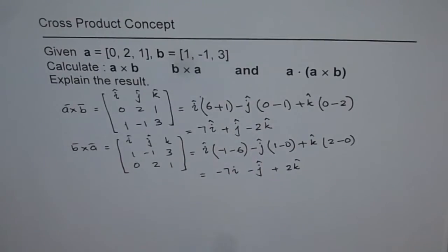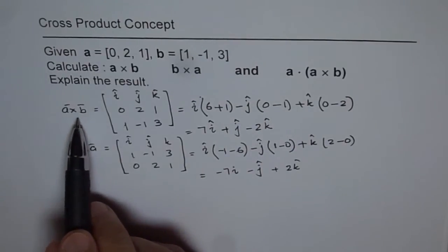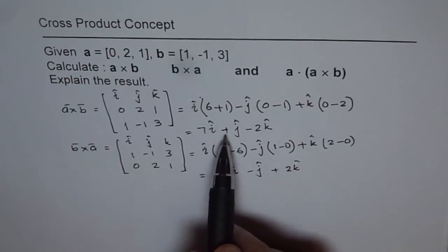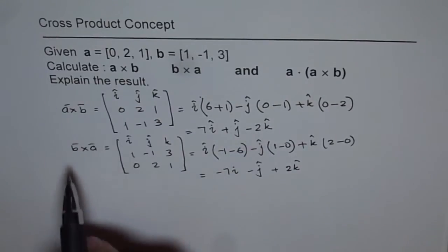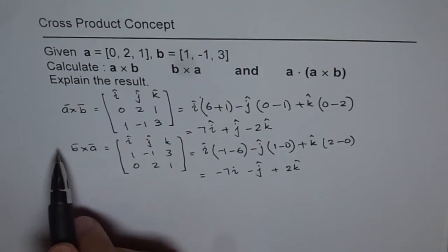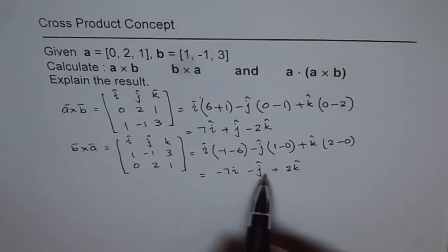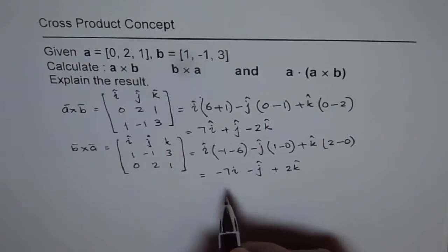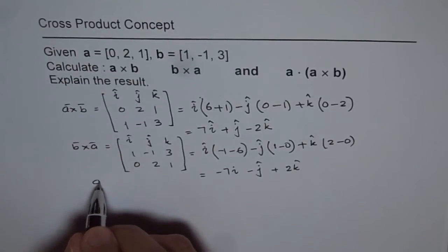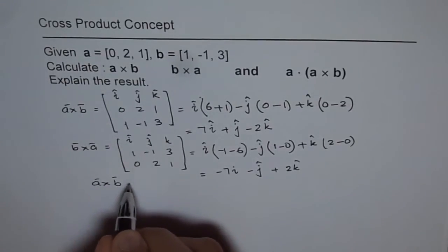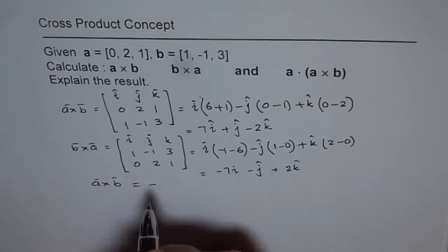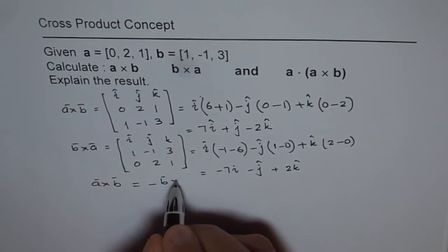As you can see here, A cross B is 7I plus J minus 2K and B cross A is actually negative of A cross B. So what we observe here is that A cross B actually equals minus B cross A.